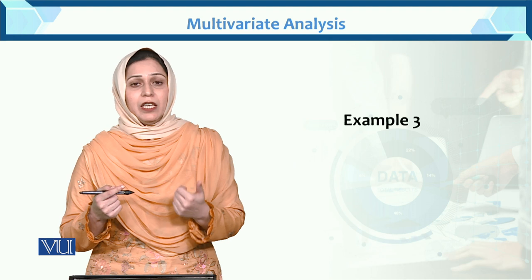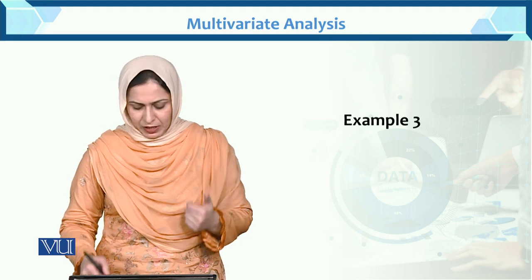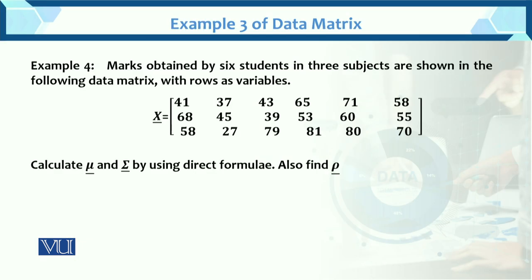Now we have the previous notation. You will have the idea that this is a direct formula — we can find the mean vector, covariance matrix, and correlation matrix. Now here is Example 3.